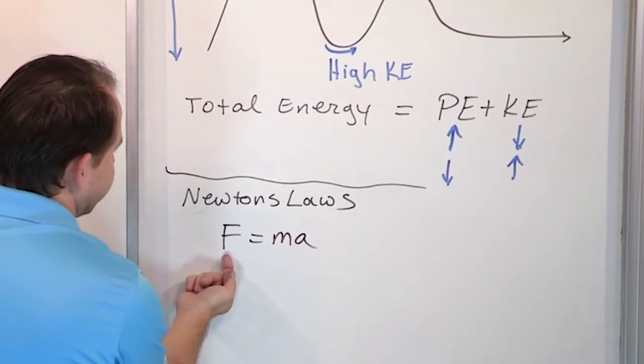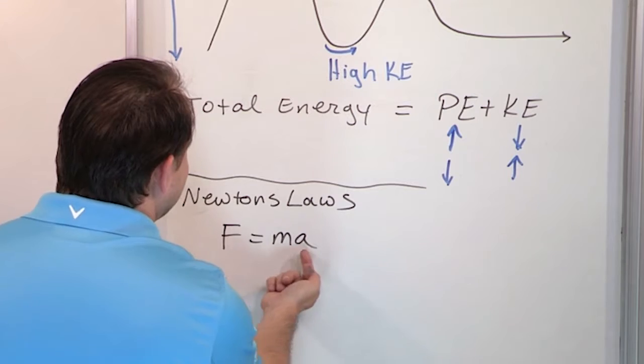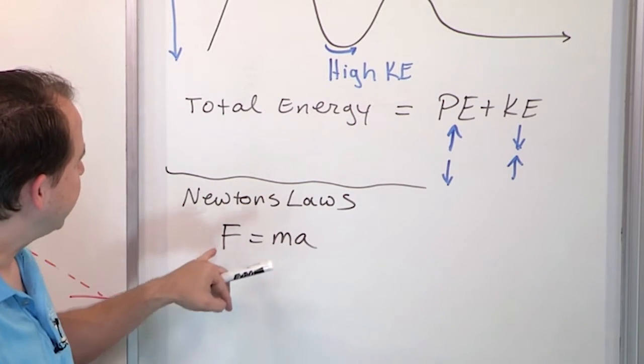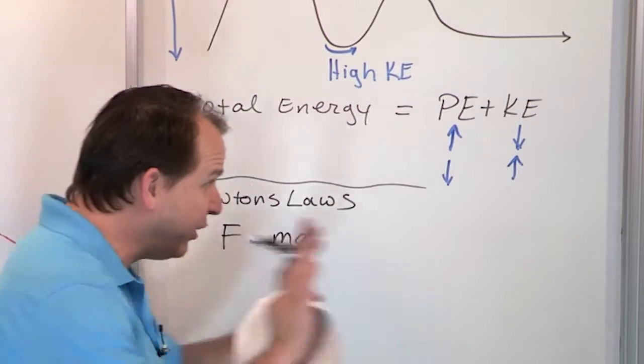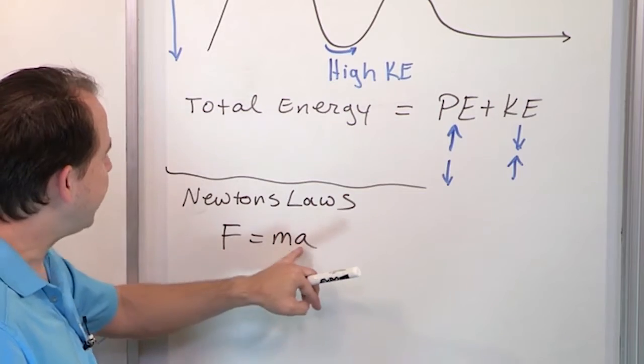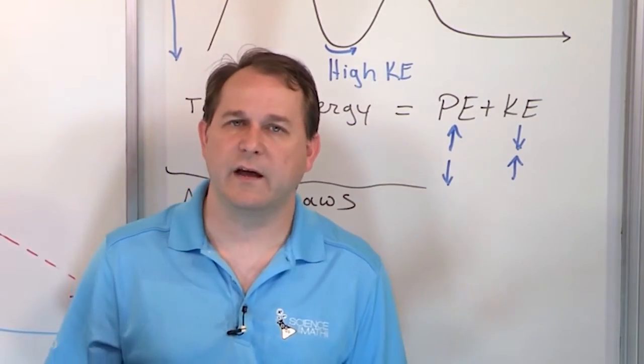So this is the force on something is equal to the mass times the acceleration. What this thing says in layman's terms is that if I push something with a force, then it has mass obviously because it's made of matter. If I push something then it must accelerate. That's all it says.